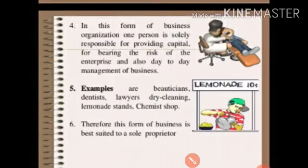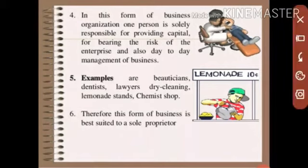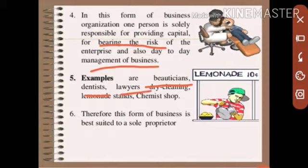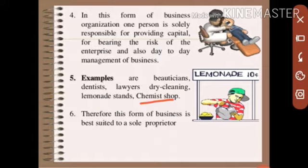They are the simplest form because of the small amount of capital needed to start up. In this form of business organization, one person is solely responsible for providing capital, bearing all the risks of the enterprise, and also the day-to-day management of the business. Examples include beauticians, dentists, lawyers, dry cleaners, lemonade stands, chemist shops, medical stores, and cobblers.